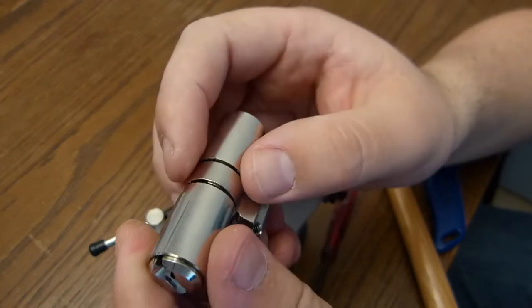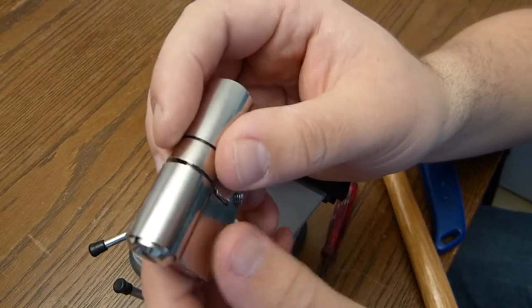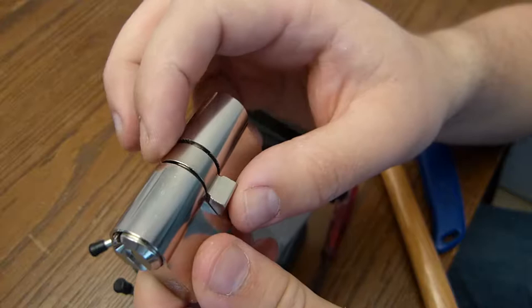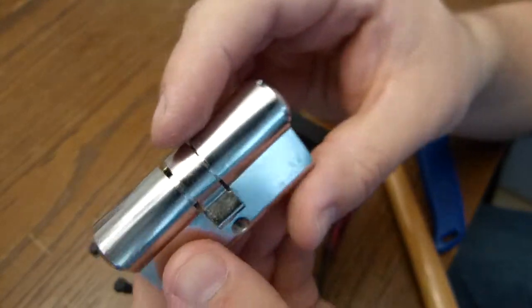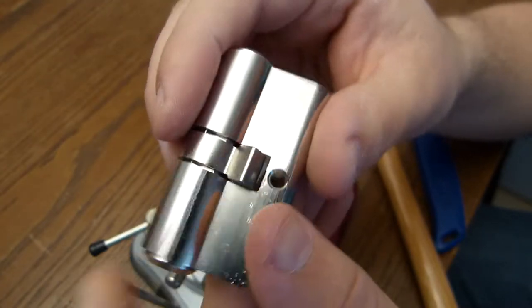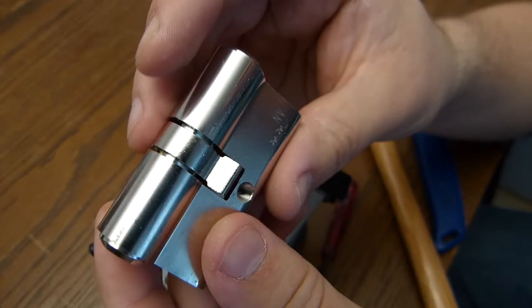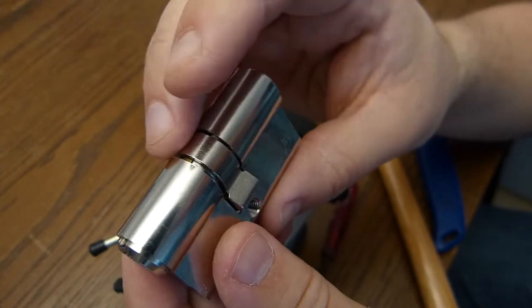We can replace this with a regular circlip but it won't be as sturdy as it was before. So this works fine for locksport but I would not recommend to put this lock back into service.